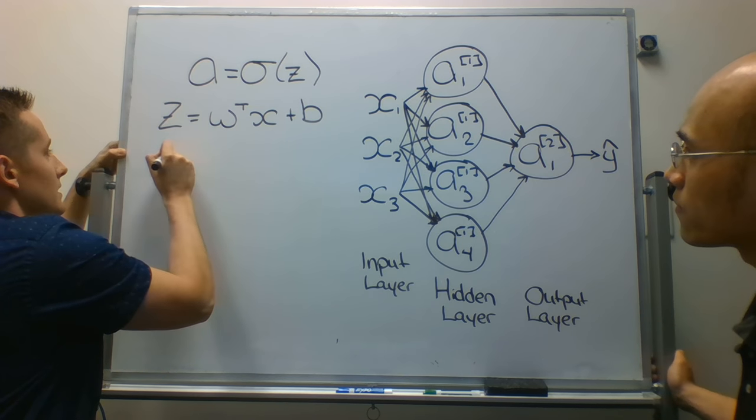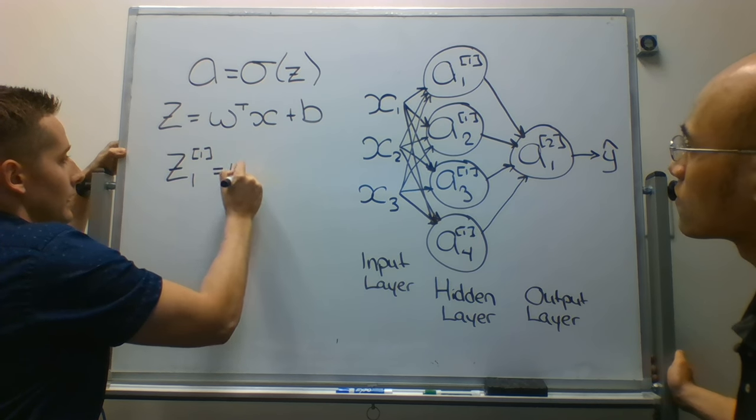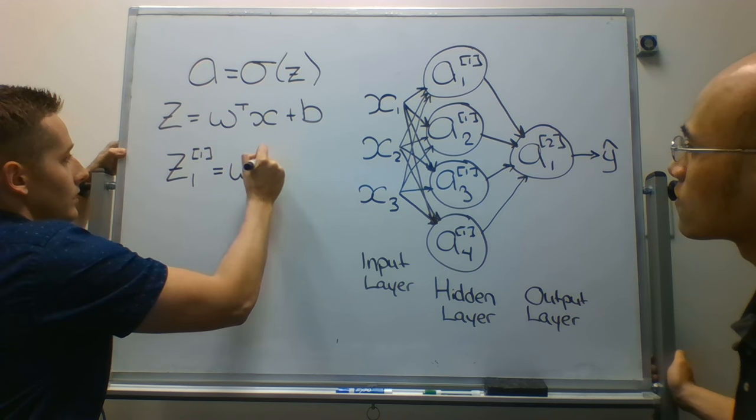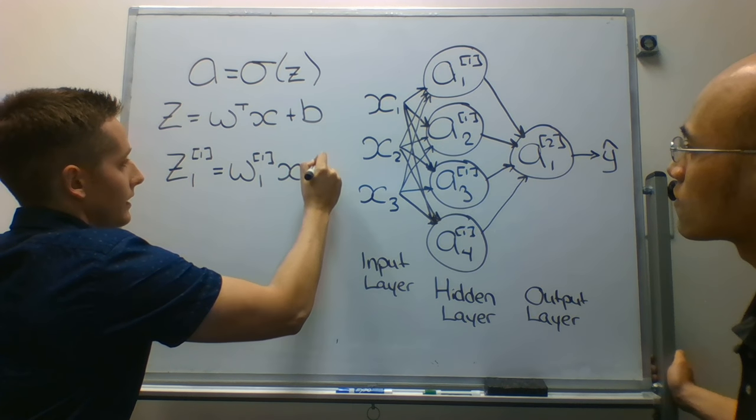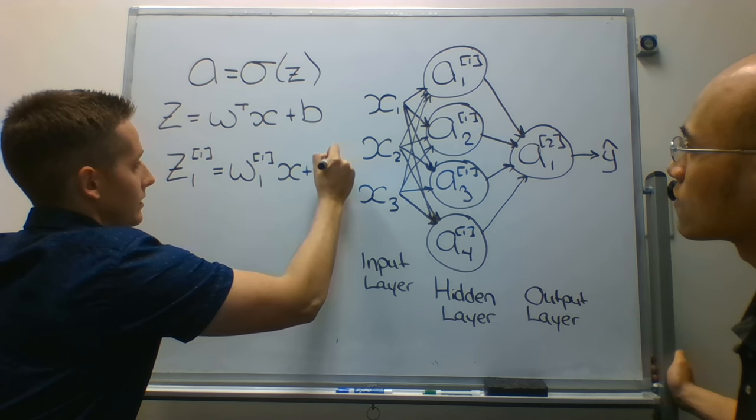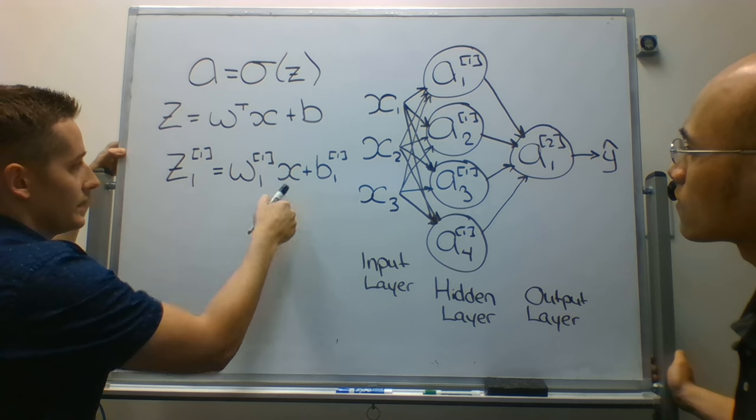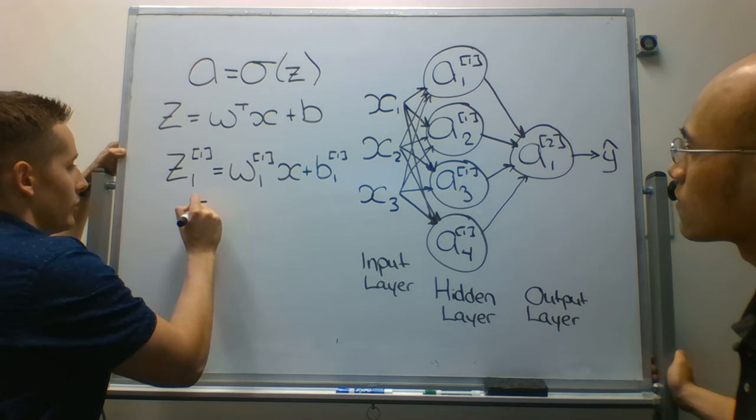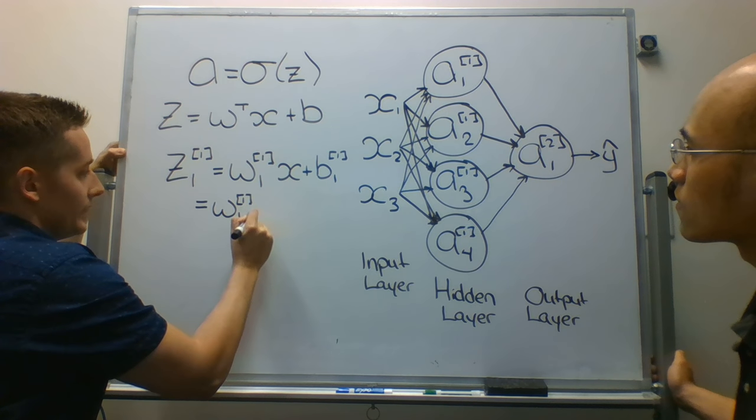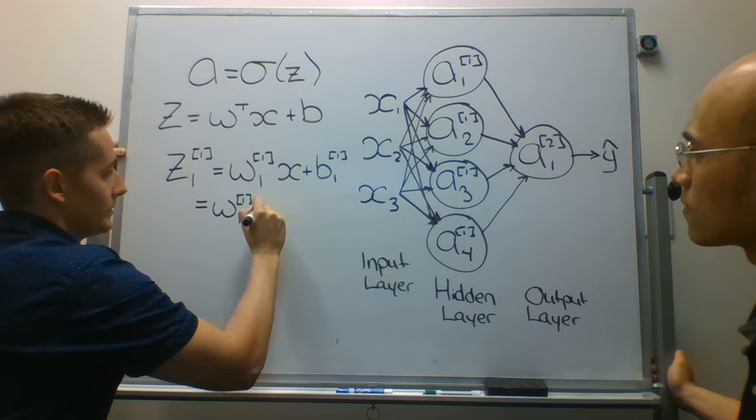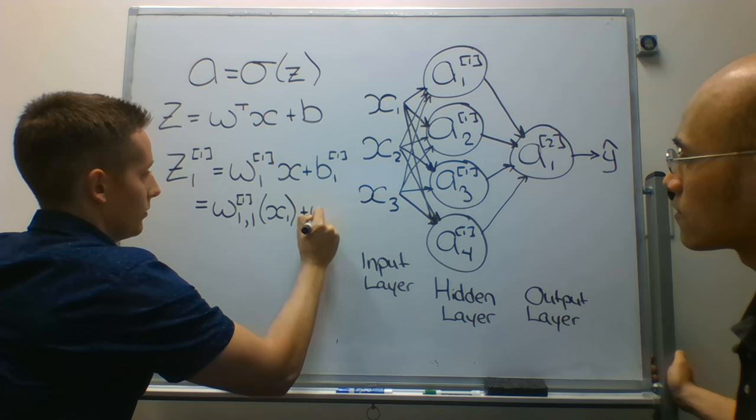So, we're first going to need to calculate A, we'll need to calculate z. Z, node 1, layer 1, is going to be equal to our weights at node 1, layer 1, times our x, plus our bias at node 1, layer 1. This is going to be a scalar term. These are still in vector representation, so I will go ahead and break those out. It's going to be weights, node 1, layer 1, applied to input 1, times. This will be multiplied by x1, plus weights 1.